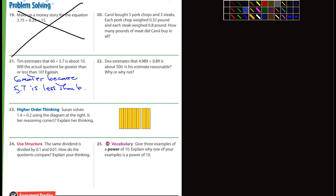Number 22. Dax estimates that 4,989 divided by 0.89 is about 500. Is his estimate reasonable? Why or why not? 500? How would he get 500? Yeah, that's too low. It should be about 5,000. So the answer is no. So 5,000. This is close to one. And what's this one close to? This is close to 5,000. So what's 5,000 divided by one? Well, that's about 5,000. So 500, no, 500 is much too low.